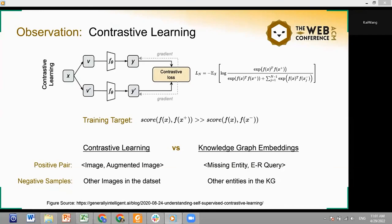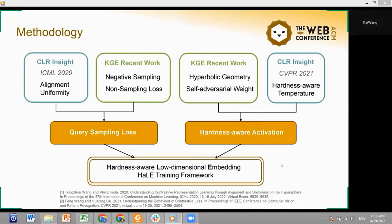We found that training a KGE model is similar to a self-supervised contrastive learning process. Training the ER query and the missing entity or triple as the positive pair, the KGE model has the same training targets. Based on the commonality of the two problems, we pay attention to two insights in recent contrastive learning papers, and they ensured us to rethink the previous work in the KGE field.